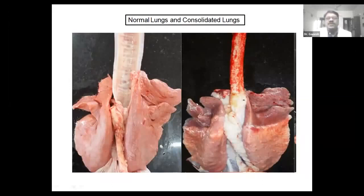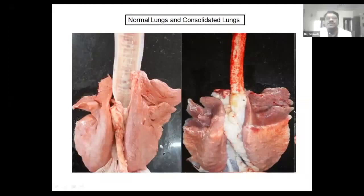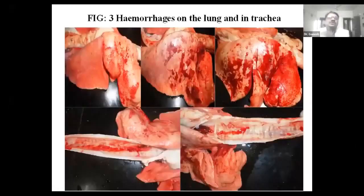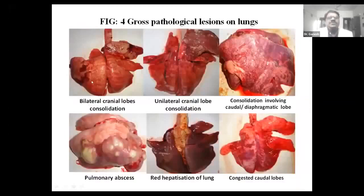In abnormal lungs, you will find discoloration due to consolidation. This is bilateral consolidation — both sides of the lung are affected with pneumonia. You will also get lesions showing severe hemorrhages in the lungs and hemorrhage in the trachea as well — hemorrhage and congestion. You will find bilateral pneumonia where both sides are affected. Then unilateral pneumonia in the cranial lobe, and consolidation in the caudal lobes.